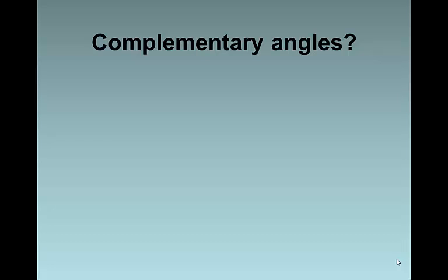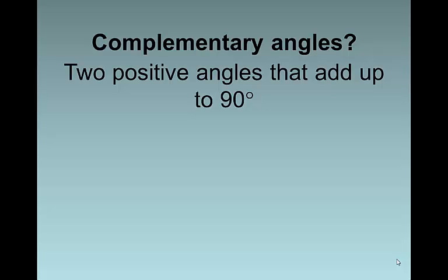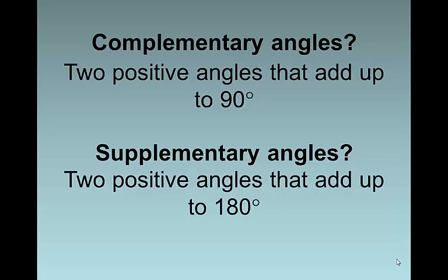Complementary angles, these are very nice angles because they complement each other. Two positive angles that add up to 90 degrees are complementary. Supplementary angles, two positive angles that add up to 180 degrees. We still have students who get those confused. C comes before S in the alphabet, and 90 comes before 180 on the number line. If you need to use that, go ahead. Just don't tell anyone.